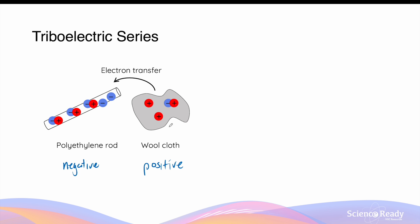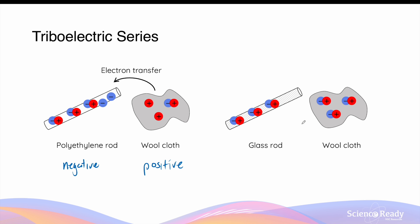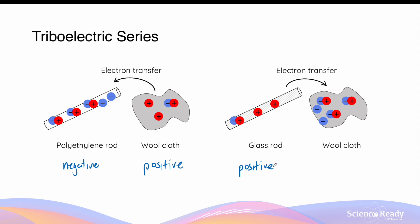This does not mean electrons always transfer from cloth to rod. When rubbing a glass rod with wool cloth, glass has a greater tendency to lose electrons than wool. So the electron transfer goes in the opposite direction — from the glass rod into the wool cloth — meaning the glass rod becomes positively charged and the wool cloth becomes negatively charged.